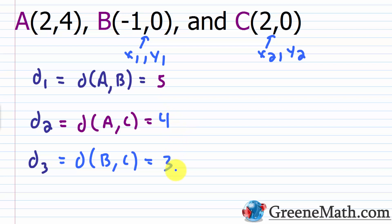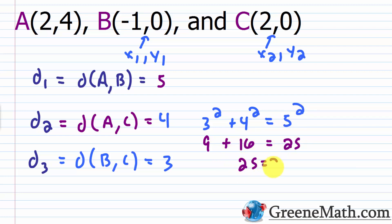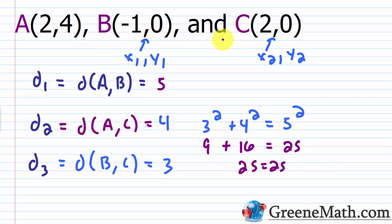So it should be true that 3 squared plus 4 squared equals 5 squared. That gives us 9 plus 16 equals 25, which is true — 25 equals 25. We end up with a 3-4-5 right triangle. So these three points are the endpoints of a right triangle.